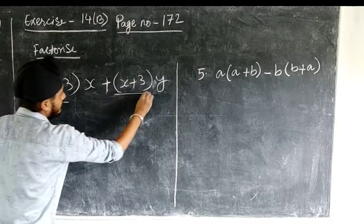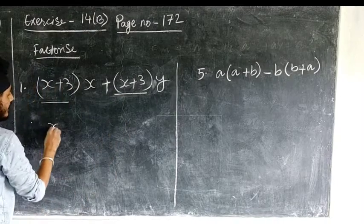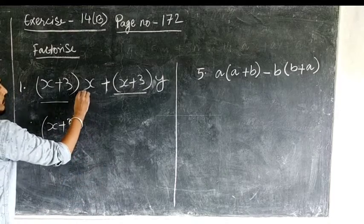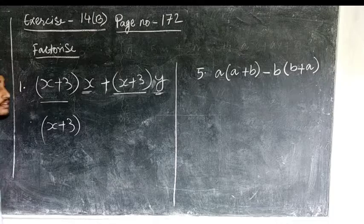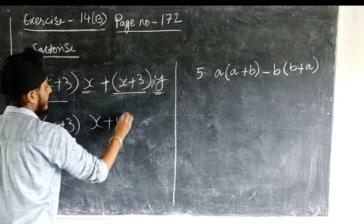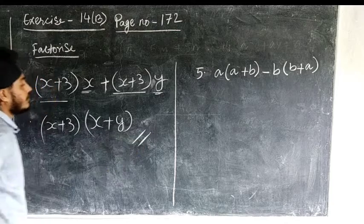You can see that (x+3) and (x+3) are common here. We will write (x+3). After that, you can see x and y are uncommon here. Then what we will write? We will write (x+y), and hence it is factorized.